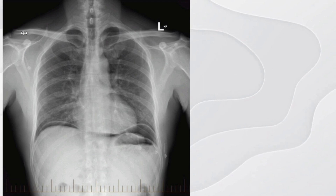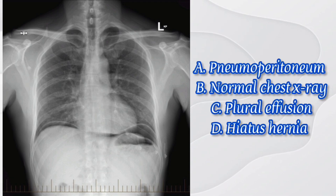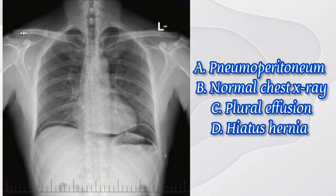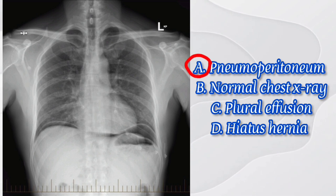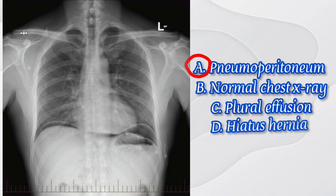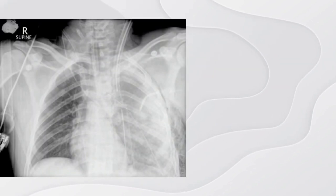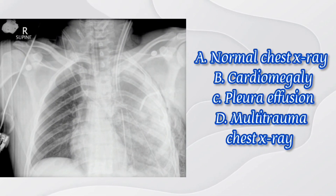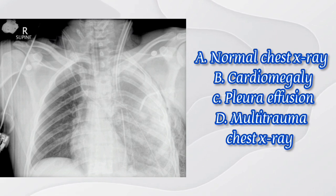For question one, the options are: A) pneumoperitoneum, B) normal chest X-ray, C) pleural effusion, and D) hiatus hernia. The correct answer here is A) pneumoperitoneum.